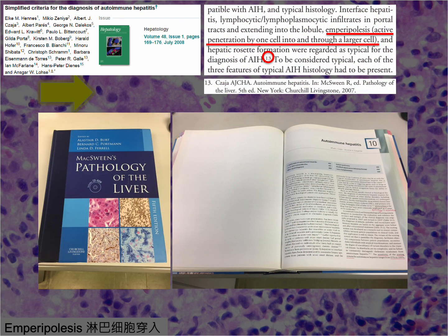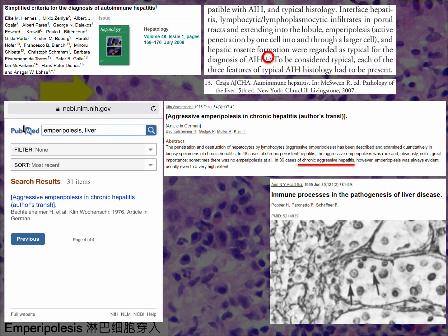Emperipolesis is listed as one of the characteristic histological features in the simplified criteria for diagnosing autoimmune hepatitis. The authors cited the fifth edition of MacSween's Pathology of the Liver as a reference, but after carefully reading through the entire chapter, I found that emperipolesis is not mentioned at all. Through a literature search, I came across the earliest paper from 1976 discussing emperipolesis in autoimmune hepatitis, sometimes referred to as chronic aggressive hepatitis, and a preceding paper from 1965 that included a histological image showcasing emperipolesis, although the term itself was not explicitly used by the authors.